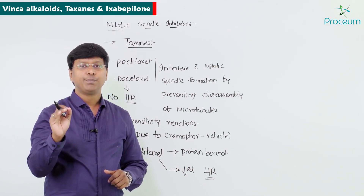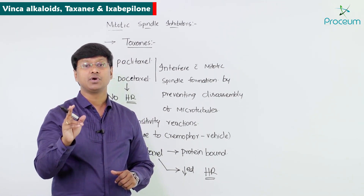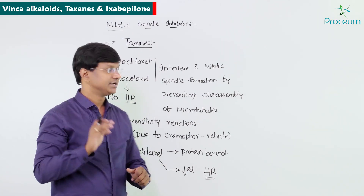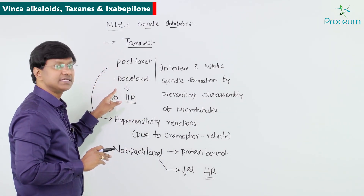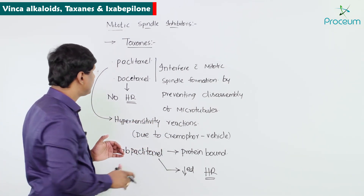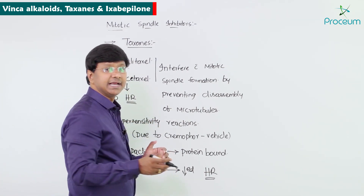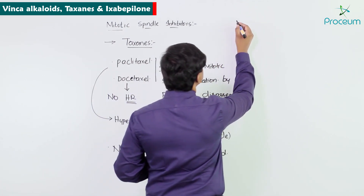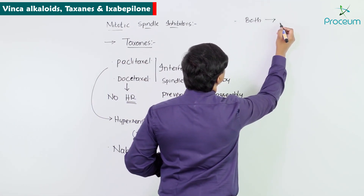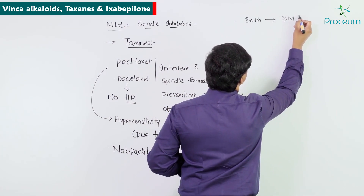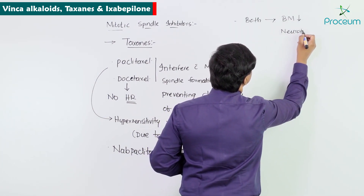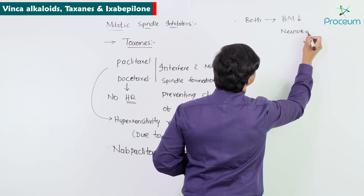Both paclitaxel and docetaxel can cause bone marrow suppression and neurotoxicity. These are the two important shared adverse effects of the taxane class.